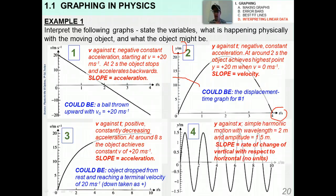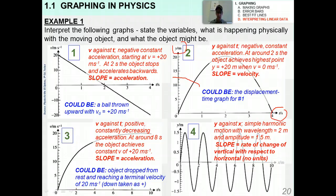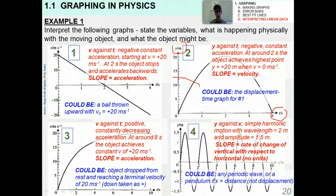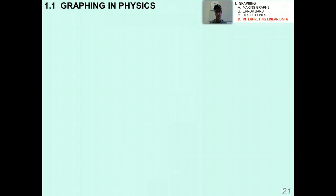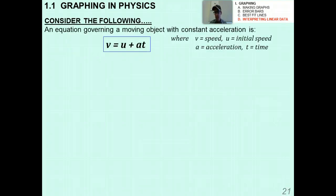Graph four is clearly a sinusoidal graph — simple harmonic motion, which we'll study later. The wavelength is about 2 meters and the amplitude is about 1.5. The slope represents the rate of change of the vertical with respect to the horizontal. These four motion graphs tell you a lot of interesting information about how things move, which is why we put so much emphasis on them.